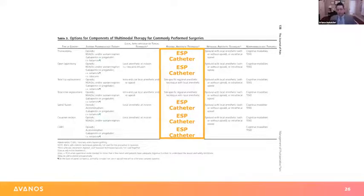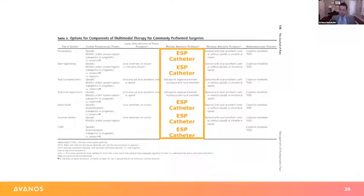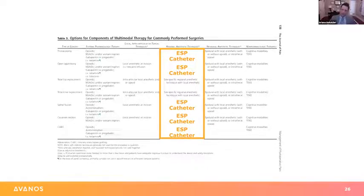For cesarean sections, we went from doing transverse abdominis plane catheters to ESP catheters. We do these after the baby is out and mom is sewn up. We give the baby to dad, which gives them a little time together, roll the patient up on her side, and place bilateral ESP catheters at about L1-L2. We run those while the patient is in the hospital, then pull them out when the patient leaves. We've essentially eliminated opioids — we give a little Toradol for crampy uterine pain, but patients do well without any opioids and just use the ESP catheters.